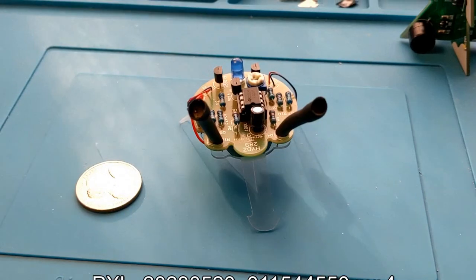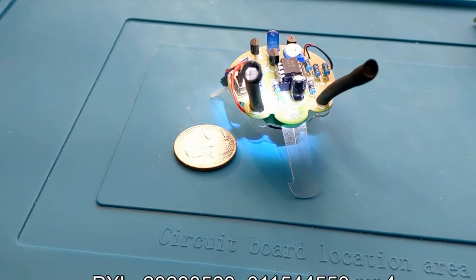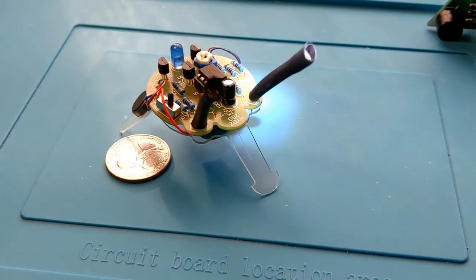This is what it looks like when we run it. Shine a light in one side, and it just moves left and right.